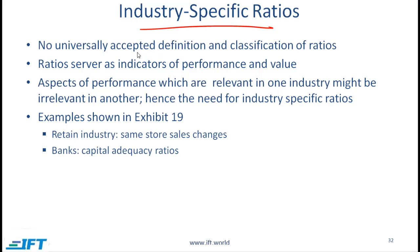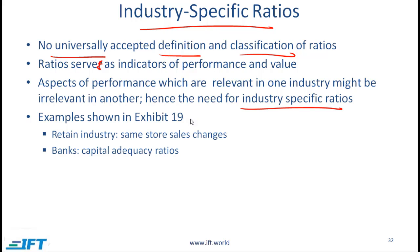Industry-specific ratios — some high-level remarks here. As has been mentioned before, there is no universally accepted definition or classification of ratios. Ratios simply serve as indicators of performance and value. There are aspects of performance which are relevant in one industry but which might be completely irrelevant in another. Hence, you will often notice the use of industry-specific ratios. I don't think you need to memorize them, but exhibit 19 in the curriculum gives you a sense for the types of ratios that are used in different industries.